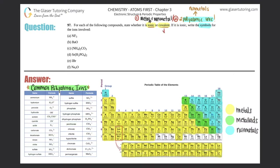If you see two polyatomic ions in a single compound, it's going to be ionic as well. Covalent compounds are non-metal plus non-metal — sharing electrons. Basically, if you don't see a metal, remember metals are ionic, it's covalent.